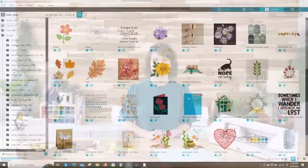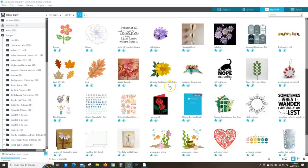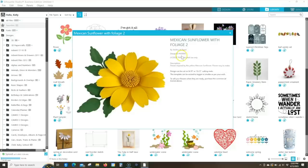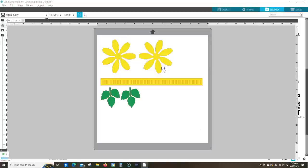Let's go into the software. All right, so here I am in Silhouette Studio, and right now I'm in my library. The design we're going to be using is called Mexican Sunflower with Foliage 2. This design ID number is 430808, and we're going to change it just a little bit from its original design, but this is the one we're using.